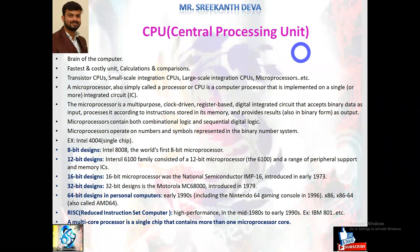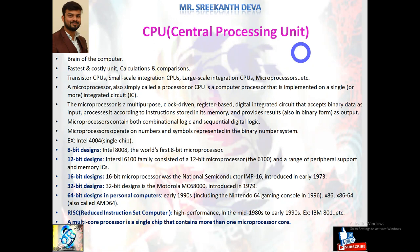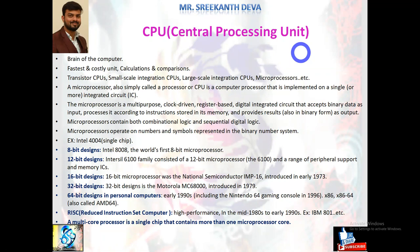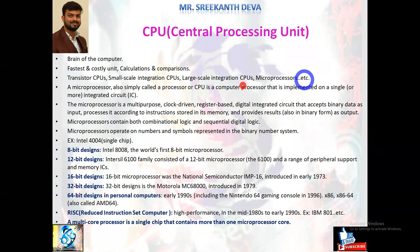The size and capacity of registers in a CPU affect its processing power. The CPU is categorized into control unit and arithmetic logical unit. CPU types have evolved through generations: small-scale integration CPUs, large-scale integration CPUs, and microprocessors. A microprocessor is a processor implemented on a single or more integrated circuits, accepting binary data as input. Digital computers understand only binary data represented by zeros and ones. Microprocessors contain both combinational logic and sequential digital logic, operating on numbers and symbols in binary number systems.